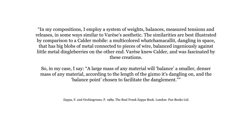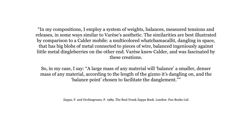In the Real Frank Zappa Book, Zappa explains that in my compositions I employ a system of weights, balances, measured tensions and releases, in some ways similar to Varèse's aesthetic. The similarities are best illustrated by comparison to a Calder mobile — a multicolored whatchamacallit dangling in space that has big blobs of metal connected to pieces of wire, balanced ingeniously against little metal dingleberries on the other end. Varèse knew Calder and was fascinated by these creations. So in my case, I say a large mass of any material will balance a smaller, denser mass of any material, according to the length of the gizmo it's dangling on and the balance point chosen to facilitate the danglement.